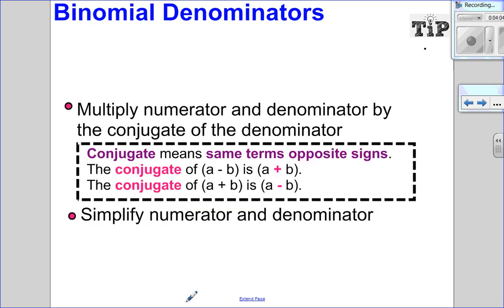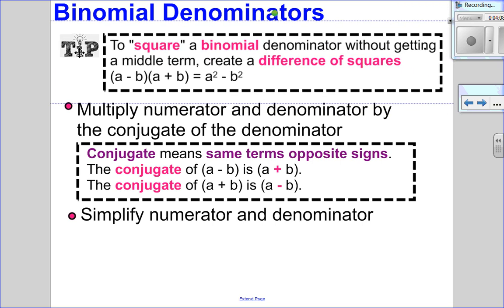So when we have binomial denominators, here is my tip for you. We are going to square, in quotes, a binomial denominator without getting a middle term by creating a difference of squares. So a minus b times a plus b is equal to a squared minus b squared. So what we're going to do is multiply the numerator and denominator by the conjugate of the denominator. Now what does conjugate mean? Conjugate is the same term, opposite signs. So the conjugate of a minus b is a plus b. The conjugate of a plus b is a minus b. So you can see in that numeric example I did, it worked out. Once we do that, we just go ahead and simplify, and of course, state any restrictions if necessary.